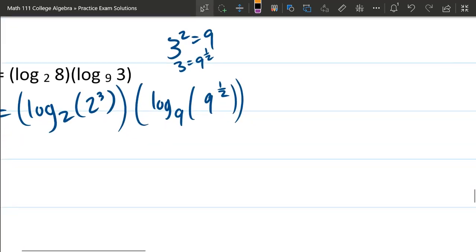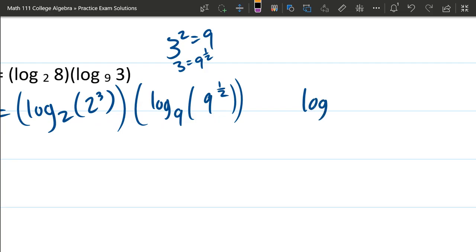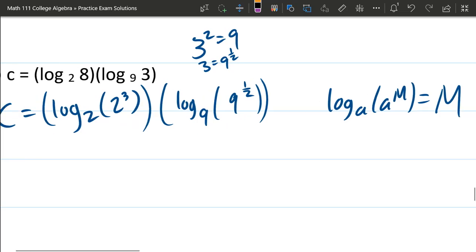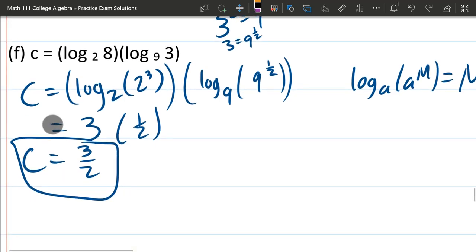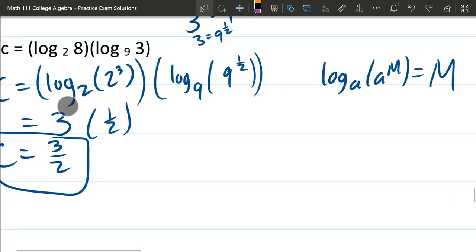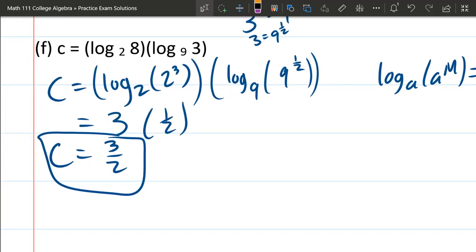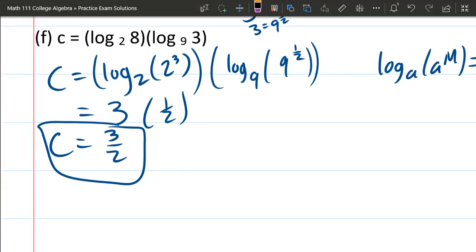Why did I write them like this? We're going to use that same property I wrote above. Log base A of A to the M equals M. So we're using this property. We can use it in both logs. Log 2 of 2 to the 3 is just 3. And log 9 of 9 to the 1 half is 1 half. 3 times 1 half is 3 halves. So that's all there is for part F. Once you see the property, it's obvious, but it can be very tricky if you don't realize that these bases and the input that these numbers are powers of each other.